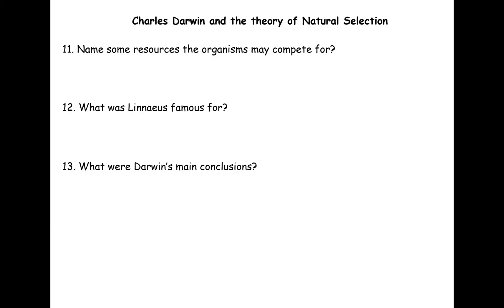To conclude, Darwin's main conclusions were: there is variation in individual phenotypes; if there is competition for resources there will be a struggle for existence; and the better adapted individuals with the more advantageous phenotypes will survive — this leads to the survival of the fittest. These individuals are more likely to pass on their genes to the next generation. Importantly, 'fittest' doesn't necessarily mean the healthiest — it means having the phenotypes which are best for that particular environment to win that particular competition.